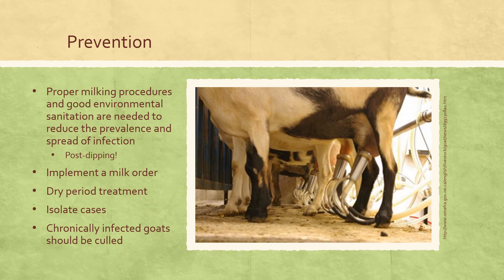There are several steps you can take to prevent mastitis in your dairy herd. Proper milking procedures and good environmental sanitation are needed to reduce the prevalence and spread of infection. Post-dipping after milking is very important to prevent bacteria from entering the teats. You need a milking order so bacteria don't spread from one stand to another. Do a dry period treatment if anyone has mastitis, isolate your cases, and chronically infected goats should probably be culled to keep the rest of your herd healthy.